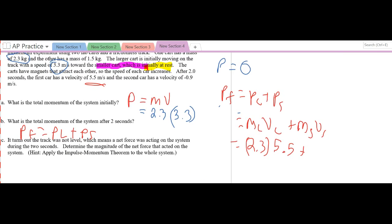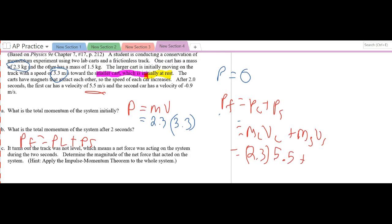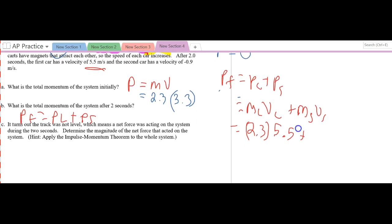And the velocity is negative .9. Don't forget the negative. It may not tell you that. It may make you reason through it. So this is 1.5 times the velocity, which is negative .9 meters per second. Plugging that into my calculator, I'm going to get 2.3 times 5.5 minus, because I got that negative in there, 1.5 times .9.